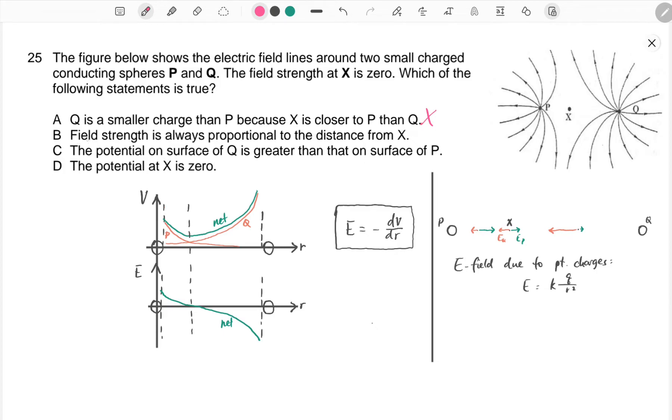What about B? Field strength is always proportional to the distance - this is not correct. The relationship is actually non-linear. So if you look at the graph I've drawn on the left, the E against R graph is a result of taking the vector sum of both graphs.